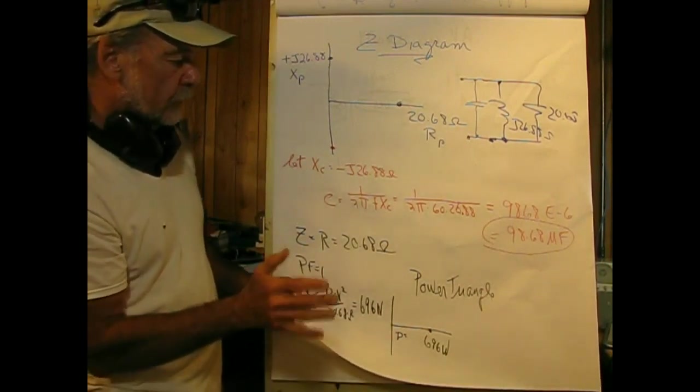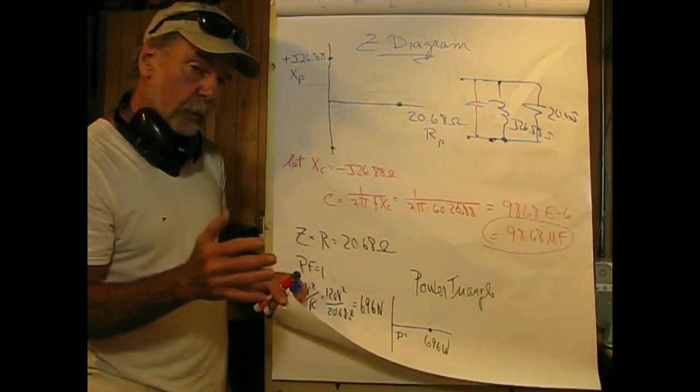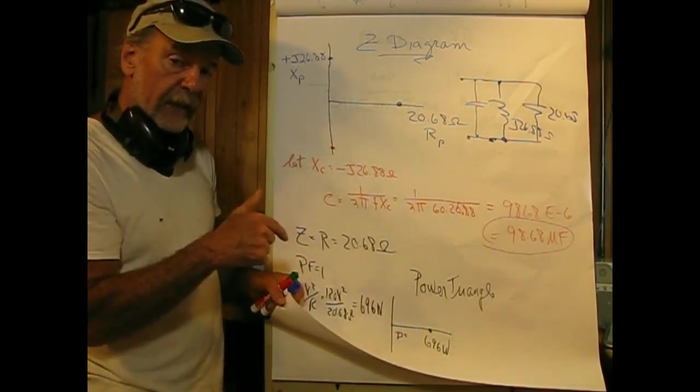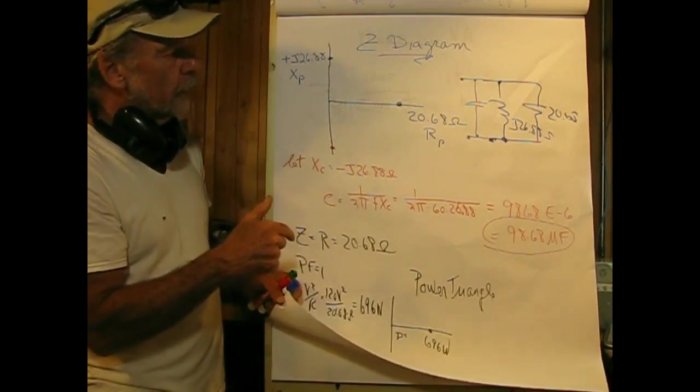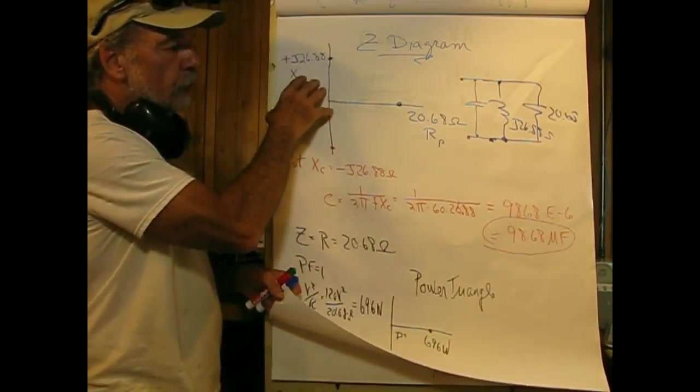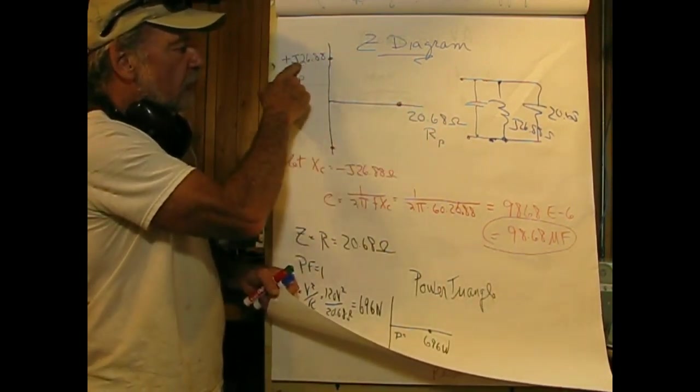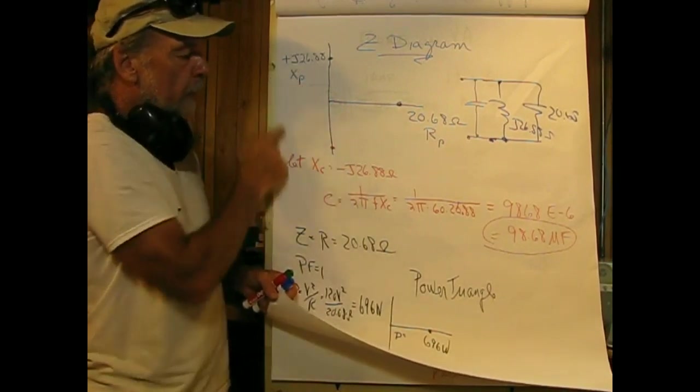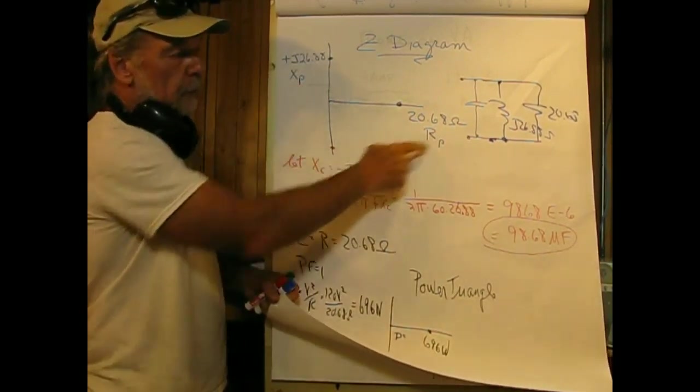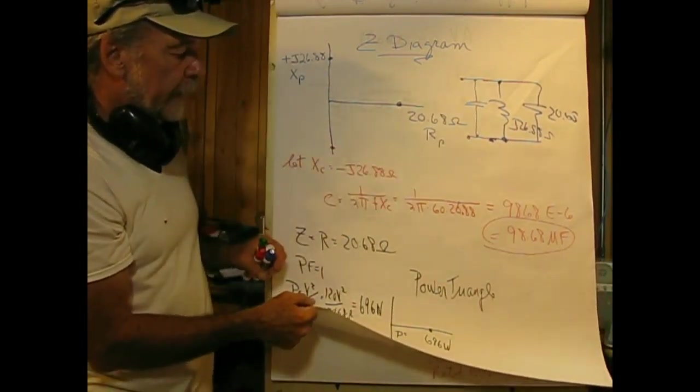So two ways to correct the circuit. One is by taking the total current, breaking it down into real and imaginary components, and then adding in a capacitor current in the opposite direction. The other is to transform the diagram from series into parallel, and then find out what the reactive element is of the parallel, and introduce another parallel part, the capacitor, of the opposite direction to basically add to zero.